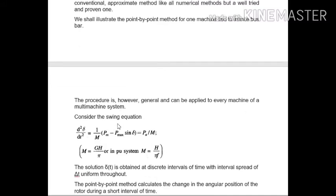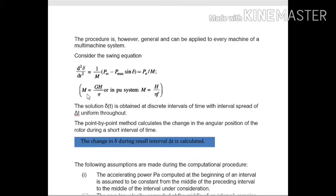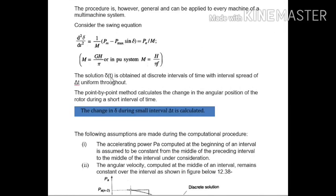For the solution of the swing equation, we consider: d²δ/dt² = (1/M)(Pm − Pmax sin δ), where Pm − Pmax sin δ is the accelerating power Pa. In short, d²δ/dt² = Pa/M, where M is the angular momentum given as GH/πf, or in per unit system as M = H/(πf). The solution of δ is obtained at discrete intervals of time with a uniform time step Δt throughout.